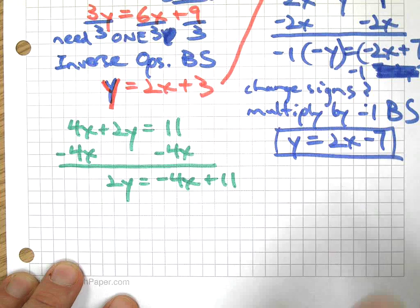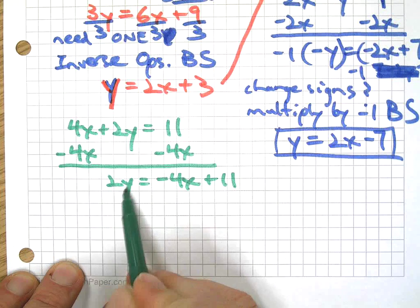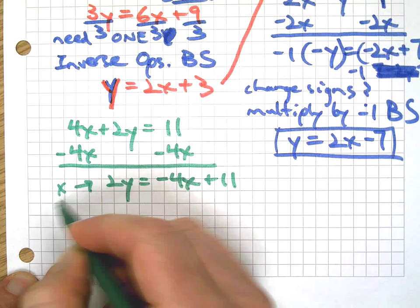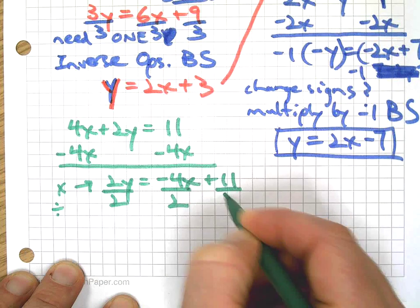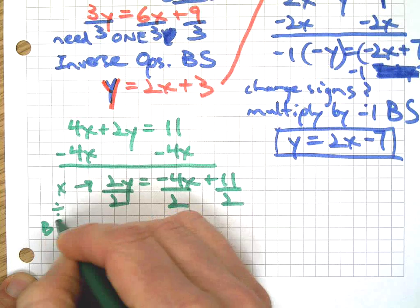Now what I need to do, inverse operations both sides, right? This is multiply, so I need to divide. So I'm going to divide everything by 2, everything both sides.